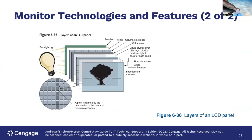An LCD panel has many complex layers: backlighting, polarizer, glass, column electrodes, color layer, liquid crystal layer, row electrodes, glass, and polarizer. Repairing one — such as a damaged backlighting source — can be very difficult. A pixel is formed by the intersection of the row and column electrodes, as shown in the diagram.